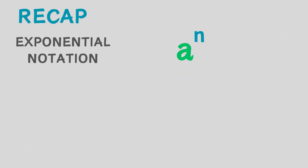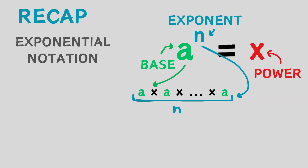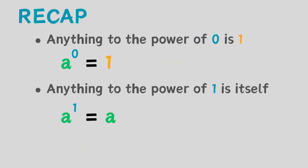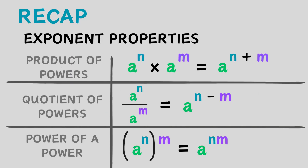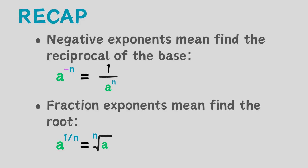Let's recap. Exponential notation consists of two parts: a base and an exponent. The base tells us what factor we are using, and the exponent tells us how many times we are multiplying the base. A power is the result of raising a base to an exponent — for example, 8 is 2 to the power of 3, so 8 is a power of 2. Anything to the power of 0 is 1, and anything to the power of 1 is itself. We also looked at the product of powers, quotient of powers, and power of a power properties. Negative exponents tell us to find the reciprocal, and fraction exponents tell us to find the roots.